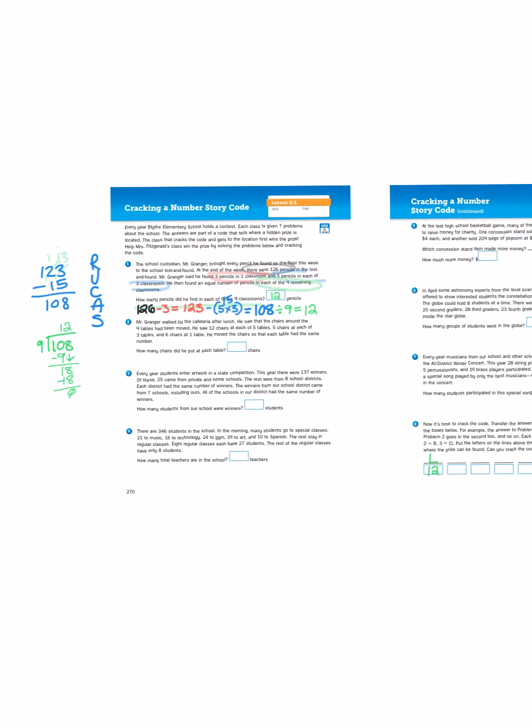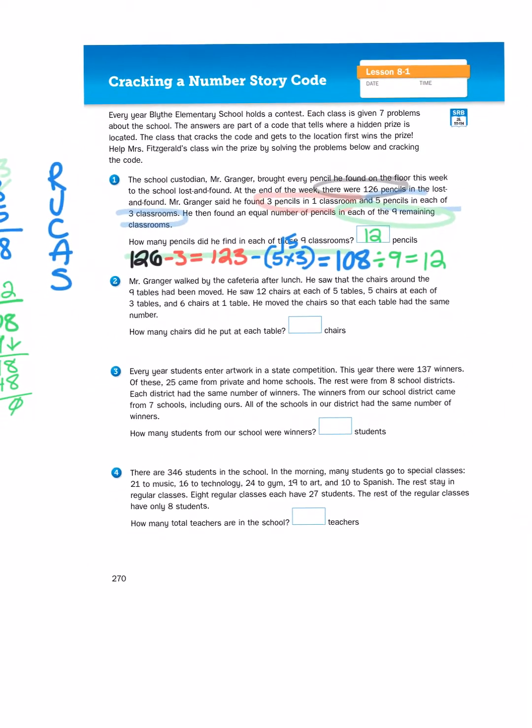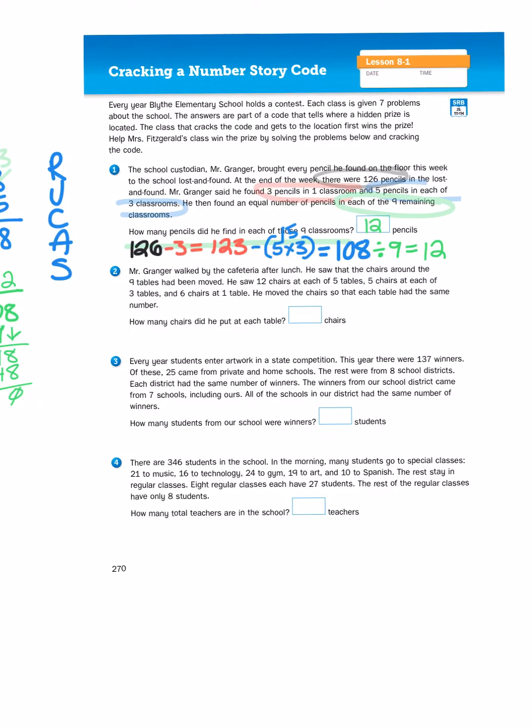That's how we're going to go about solving all these story problems. We're just going to look for the strategy to come up with the answer. As you can see, the first problem had multiple steps in order for me to find the answer of 12, and then we were able to find the first letter of the missing word. Let's try one more problem.